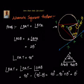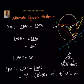So the Alternate Segment Theorem says the angle between the chord and the tangent is equal to the angle made by the chord in the alternate segment. The chord AB divides the circle into two segments: the major segment ABP and the small segment. The major segment is the alternate segment here.